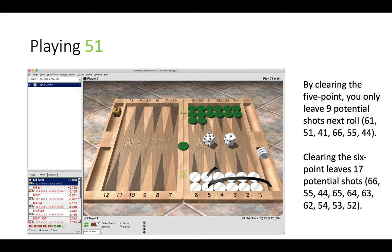So here we need to be careful. We do not get ourselves into a situation where we leave more rolls in the future. So clearing the 5-point leaves 9 potential shots, but clearing the 6-point would leave 17 potential shots. Almost twice as many shots, which is why it is a blunder. So here we need to be very careful. We do not leave more shots in the future, particularly against green's closed home board. So simply here we make the safest play by clearing the 5-point.